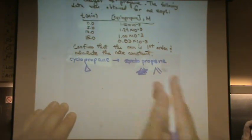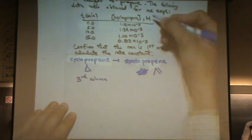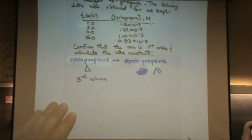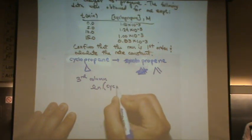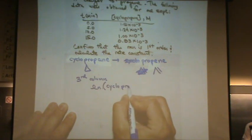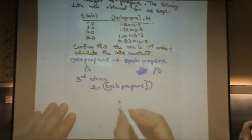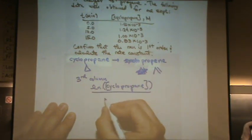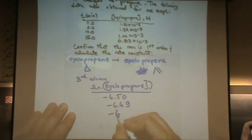So let's do that. So what I would do is make a third column in this little table here, and the third column would be the natural log of cyclopropane. Okay, so the natural log of all four of these numbers, if you did that, you'd get minus 6.50, minus 6.69, minus 6.91, and minus 7.09.